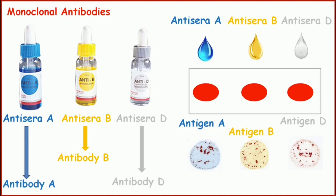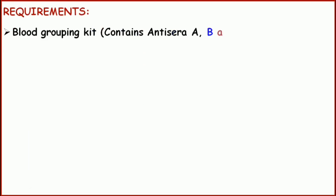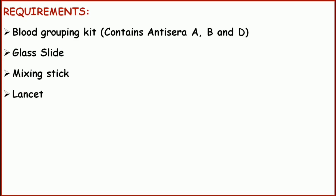Now let's move on to the requirements. We need a blood grouping kit which contains antigen A, antigen B, and antigen D. We also need a glass slide, mixing stick, lancet, 70% alcohol, cotton, and a marker to mark the slide as A, B, and D.